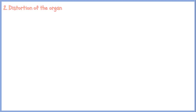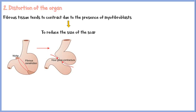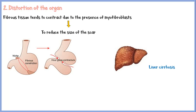Another feature due to fibrosis in chronic inflammation is distortion of the affected organ. When formed, fibrous tissue tends to contract due to the presence of myofibroblasts. The main goal of this contraction is to reduce the size of the scar. However, in situations where extensive fibrous contraction takes place, distortion of the organ may occur. The most common example is hourglass contracture of the stomach. In addition, liver cirrhosis may also cause distortion of the liver.